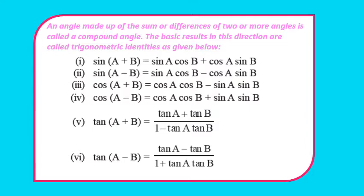First: sin(A+B) = sinA cosB + cosA sinB. Then sin(A−B) = sinA cosB − cosA sinB. Then cos(A+B) = cosA cosB − sinA sinB. cos(A−B) = cosA cosB + sinA sinB. Then tan(A+B) = (tanA + tanB)/(1 − tanA tanB). And tan(A−B) = (tanA − tanB)/(1 + tanA tanB).